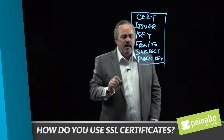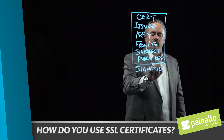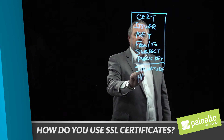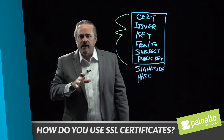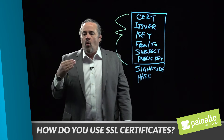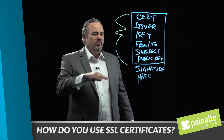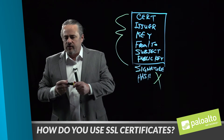The last piece of information is a signature, which is actually just a hash. This signature hash represents all of the information contained on the certificate. If anything has been changed — for instance, the to or from dates, or the certificate is loaded on the wrong server, or somebody has tried to change the subject — then the hash will no longer match, and you'll get a certificate warning that something is wrong. Now let's take a look at how all of this information is used during an SSL session setup.